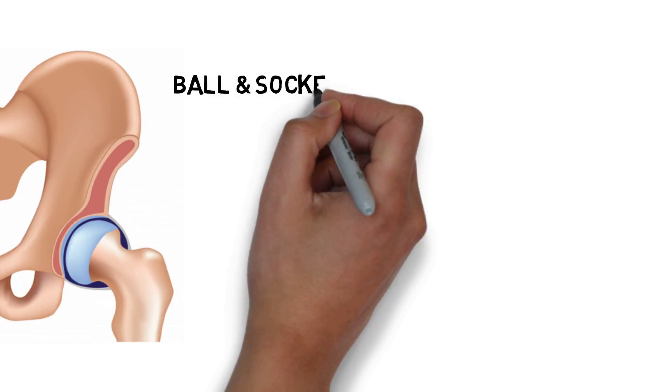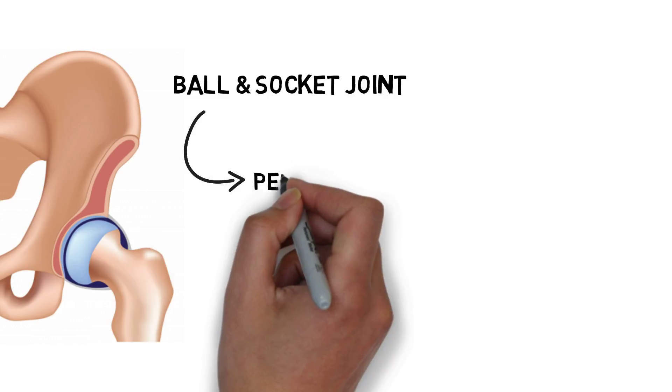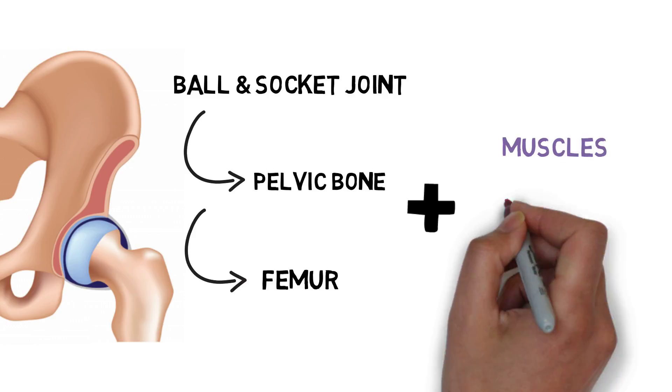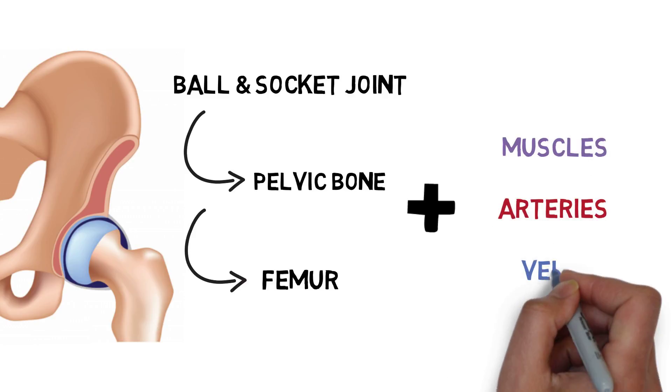The hip joint itself is what is known as a ball and socket joint where the pelvic bone and femur come together. This joint is supported and stabilized by various muscles and carries a high density of arteries and veins.